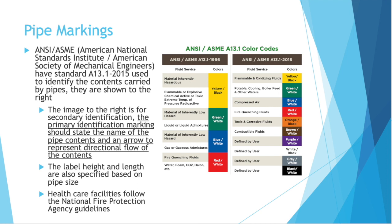Pipes used in industry to convey fluids should be marked with the contents of the pipe. In America, ANSI and ASME — the American National Standards Institute and the American Society of Mechanical Engineers — have standard A13.1 2015, used to identify the contents carried by pipes. The primary identification marking should state the name of the pipe contents and an arrow to represent directional flow. The color of the marking and font can also help identify the contents. For example, a green label with white font indicates material of inherently low hazard, while a yellow label with black font means the material is inherently hazardous.